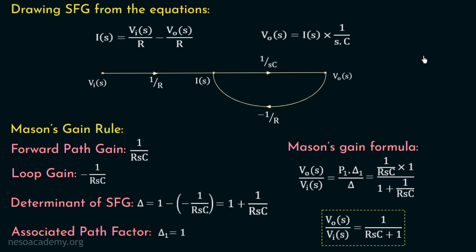You may wonder why we used the signal flow graph when the voltage divider rule gives the answer in one step. For simple circuits, the voltage divider rule is easier. But for complex circuits, it becomes very difficult to apply the voltage divider rule, and the signal flow graph method is very useful in those cases. Please review this lecture and observe these steps carefully. We will discuss more examples on modelling of electrical networks in upcoming lectures. Thank you for watching — see you in the next lecture.